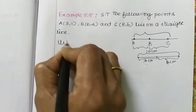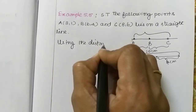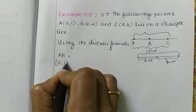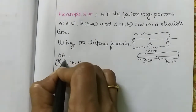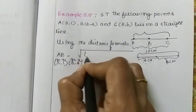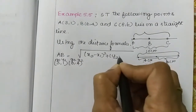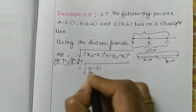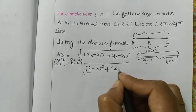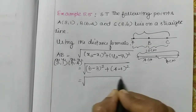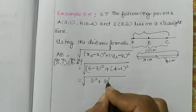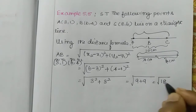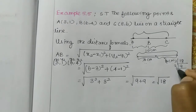So we will use the distance formula. First, the distance between A and B. A is (3, 1) and B is (6, 4). These are x1, y1 and x2, y2. The formula gives: root of (x2 - x1)² + (y2 - y1)² = root of (6 - 3)² + (4 - 1)² = root of 3² + 3² = root of 9 + 9 = root of 18.